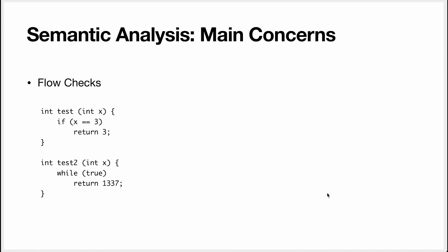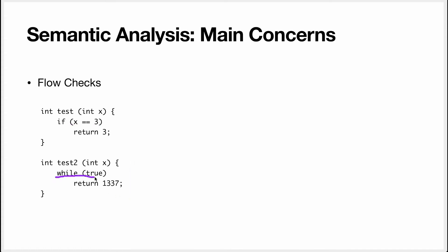Another aspect of semantic analysis — one that is not often discussed — is flow checking. This is an invalid Java program: it should return an integer, but it only returns inside the if-branch when x is true. If x is not true, the function doesn't return anything. Java is actually quite smart here — this is a valid Java program because it determines that the while loop is always entered, so this function will always return.